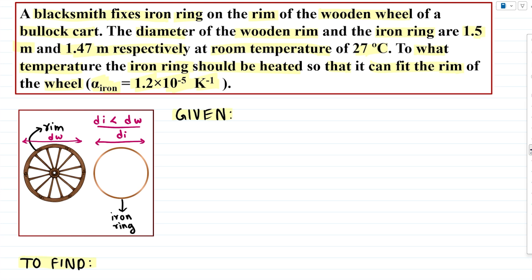So let's move on. First step is to write all the data that has been given to us. The first set of data is the diameters. We have given the diameter of the wooden rim dW is 1.5 meters. And similarly we have the diameter of our iron ring dI which is 1.47 meters, slightly less than our wheel diameter.